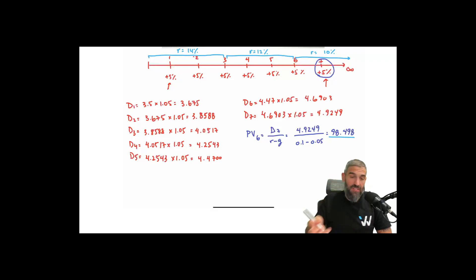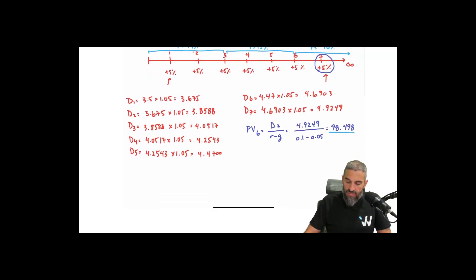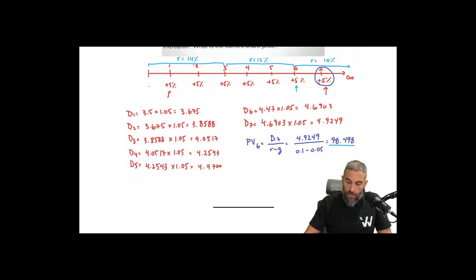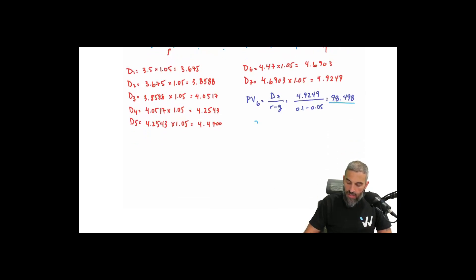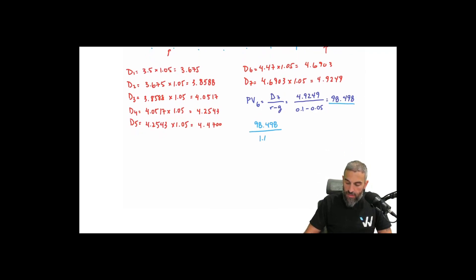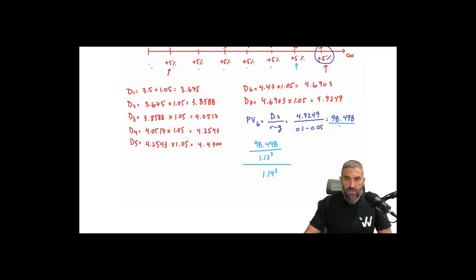The goal now would be to find the present value of everything. And this is where it can get a bit complicated because the rate keeps changing. For example, this is the present value of time 6 over here. If I want to get it back to time 0, I need to discount 3 years at 12% and another 3 years at 14%, which means that would be 98.498 divided by, so I'm discounting at 12% for 3 years. And then I'll take that answer and discount it at 14% for another 3 years. And again, what I've done is I've taken this and I've returned it back to time 0, the present day.